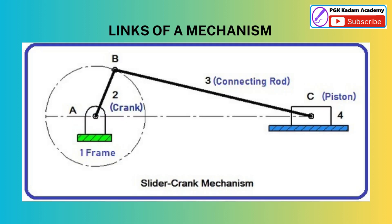In a Slider Crank Mechanism: Link 1 is the fixed link and includes the frame and all other stationary parts like the crankshaft bearing. Link 2 includes the crankshaft, which has rotational motion about a fixed axis. Link 3 is the connecting rod, an intermediate link. Link 4 is the piston, having reciprocating rectilinear translatory motion.